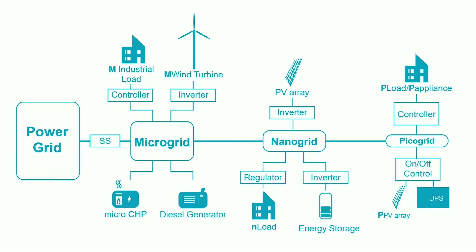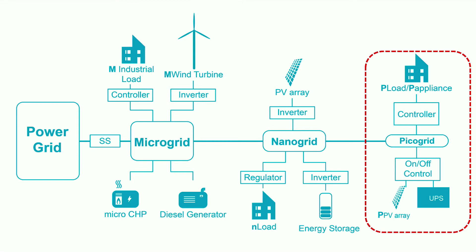Picogrids can be considered as the low-power microgrids. A household can be considered a picogrid, for example. A picogrid typically consists of a few household appliances, such as typical household loads, small-scale uninterruptible power sources, and PV units. Picogrids can make up the so-called nanogrids. Their size may vary from hundreds of watts up to a few kilowatts.